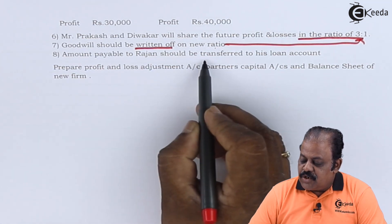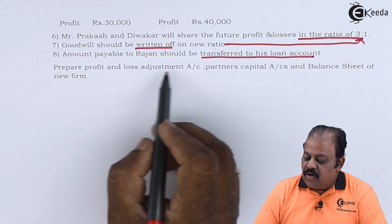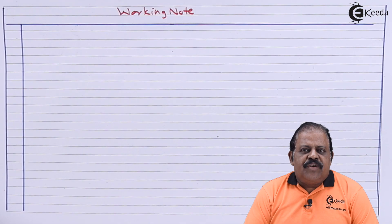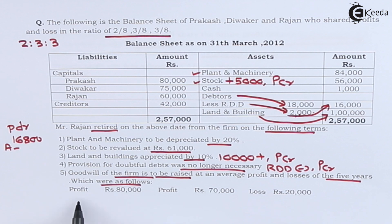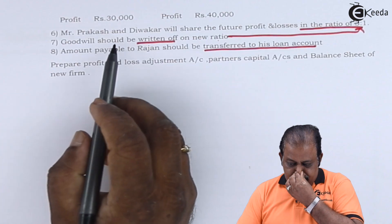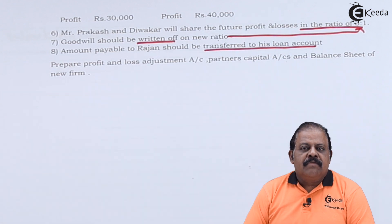Amount payable to Rajan should be transferred to his loan account. We need to prepare a profit and loss adjustment account, partners' capital account, and the new balance sheet. Let us first prepare a working note for the treatment of goodwill. The profits and losses over 5 years are: profit 80,000, profit 70,000, loss 20,000, profit 30,000, profit 40,000. Let us calculate the firm's goodwill.